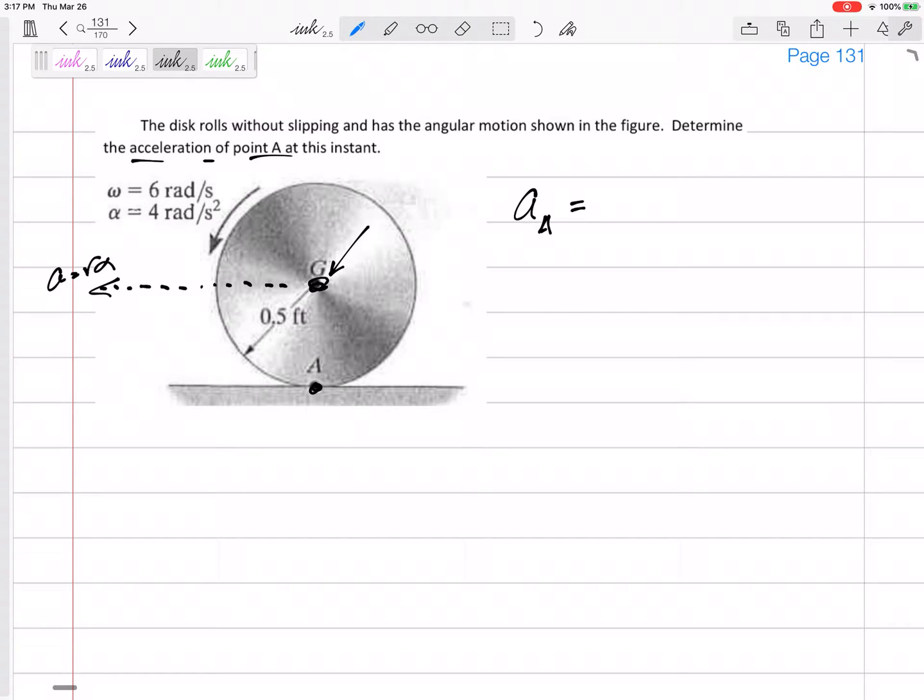We do know its acceleration is in this direction, and it is r alpha. So I'm going to jump from G to A. So I'll say A_A equals A_G plus A_A/G, and immediately rewrite this as A_G plus alpha cross R minus omega squared times R_A/G.